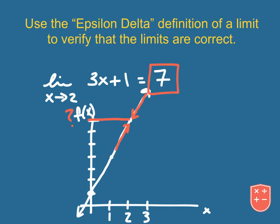This one's pretty easy to do because if I just want to figure out what this is, I can just do direct substitution and I get 3 times 2 plus 1, and that's going to give us 6 plus 1, which gives us 7. But what we want to do is use this concept of the epsilon-delta definition to verify that 7 is actually the answer.